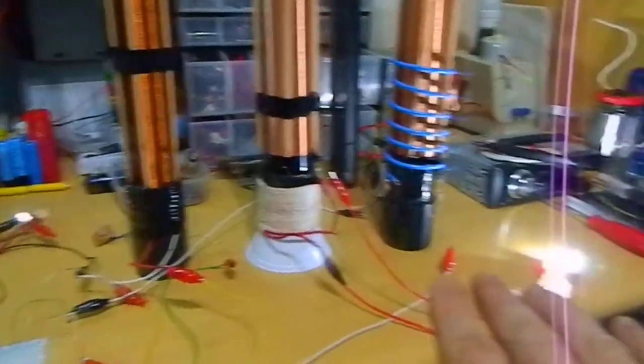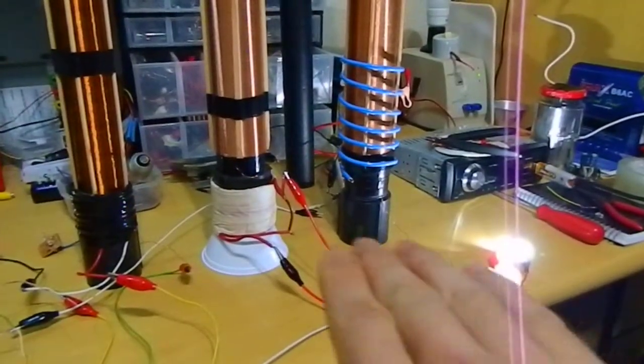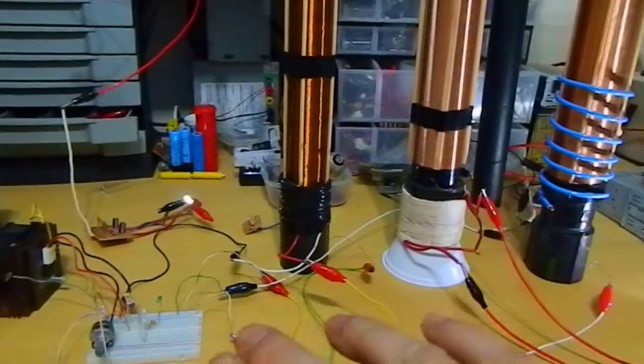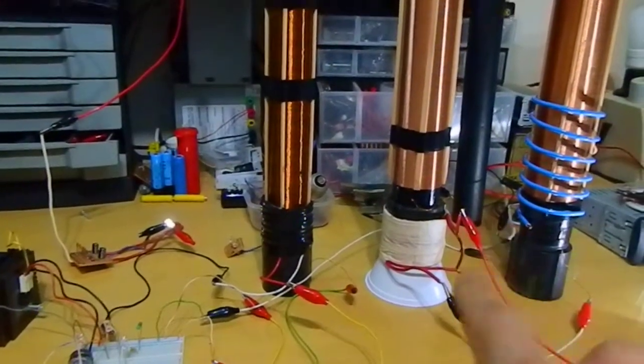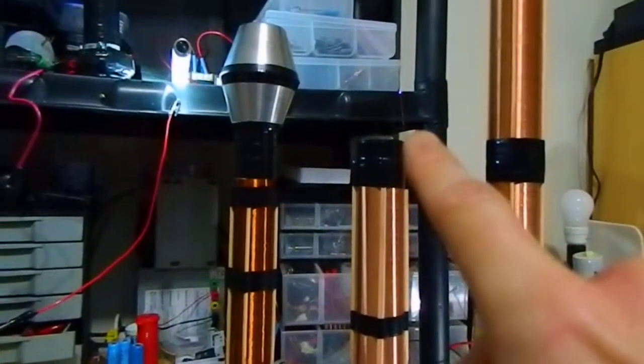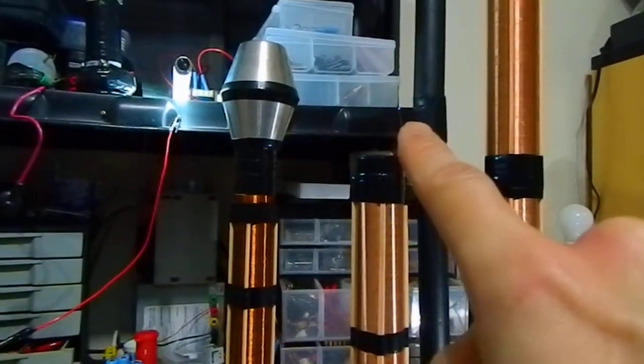So this is the circuit without connecting the earth ground to the Slayer Exciter. The earth ground is connected just with this coil with the plasma burst.